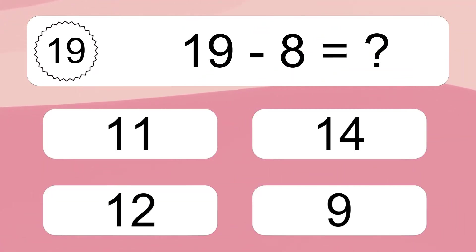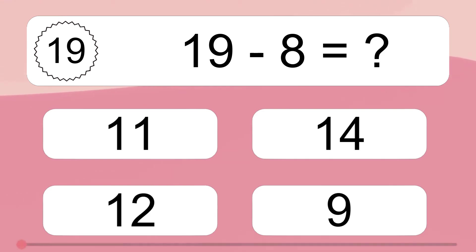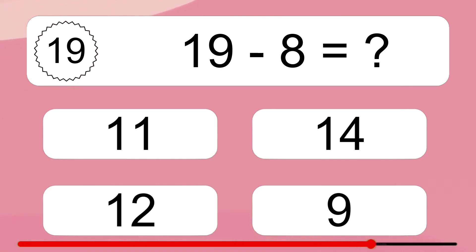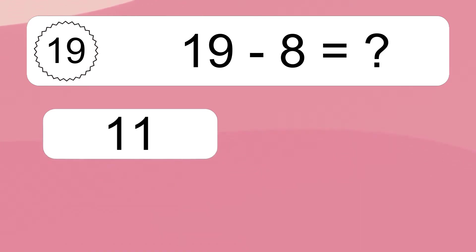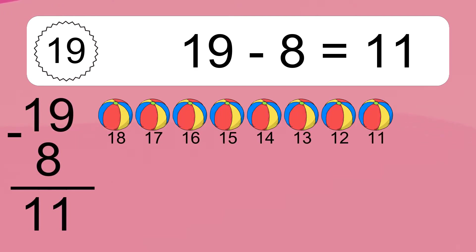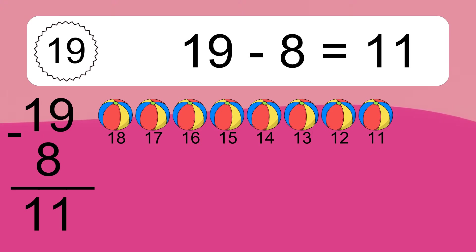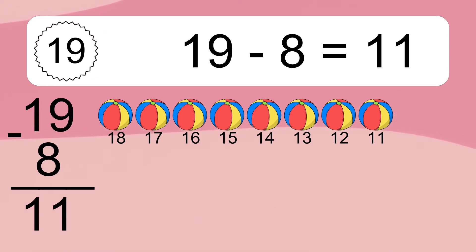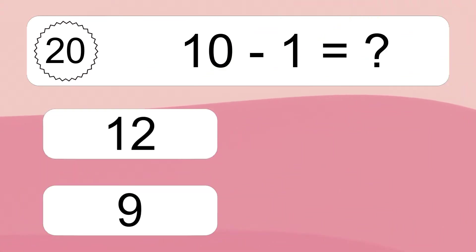19 minus 4 equals what? 19 minus 8 equals 11. Let's count it: 18, 17, 16, 15, 14, 13, 12, 11.